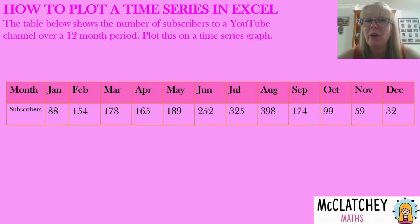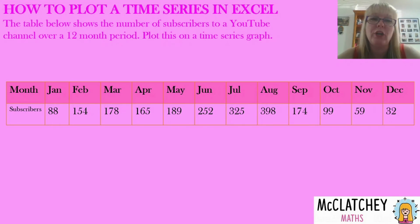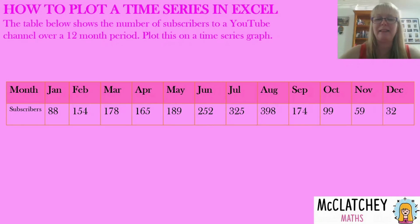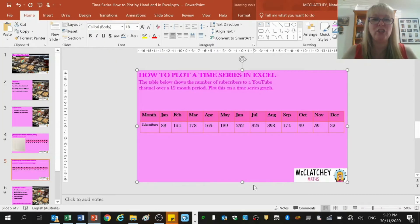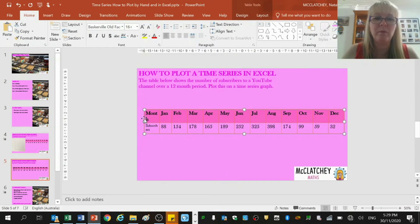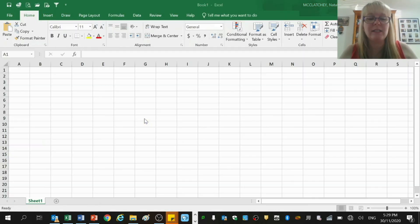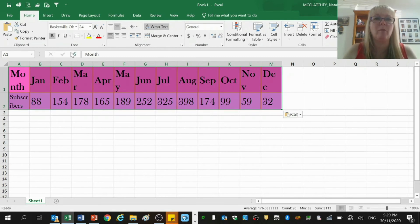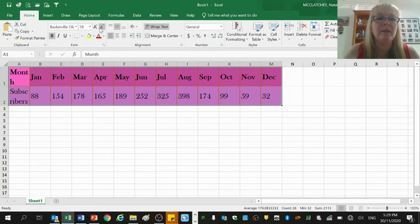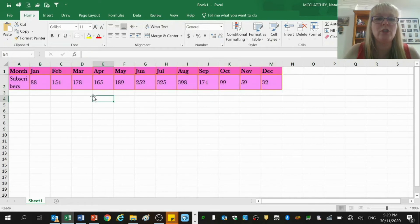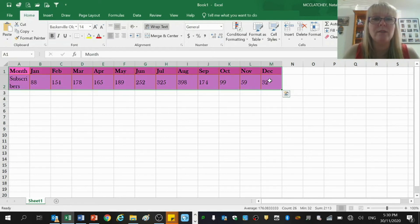Now that we've done that by hand, we're going to plot a different example in Excel — the number of subscribers to a YouTube channel over a 12-month period. They've got a range of subscribers from 32 all the way up to 398. We're going to copy and paste this table into Excel. Obviously if you were given a hard copy question you'd have to physically type that in, but because we have a digital version we can copy and paste it straight in. It's actually fairly straightforward to graph a time series plot in Excel, which is one of the beauties of software.